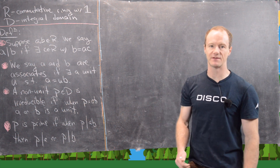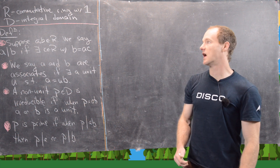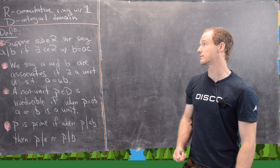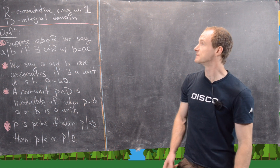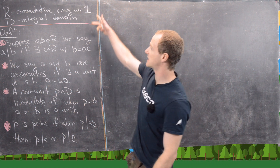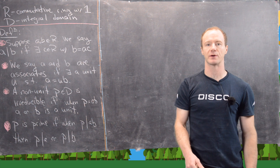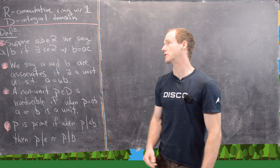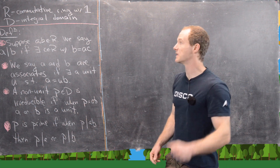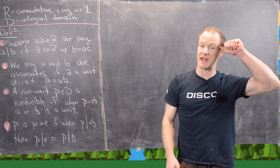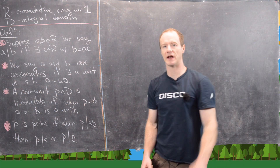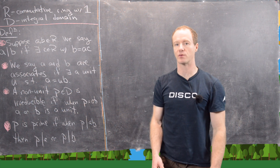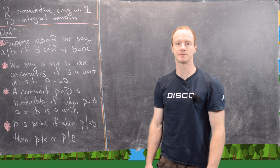We need a bunch of definitions first before we get started, and then we'll look at some simple examples. In this setup, R will be a commutative ring with 1, and D will be an integral domain. Recall that an integral domain is a commutative ring with 1 where there are no zero divisors.